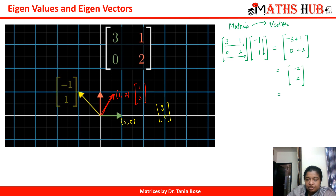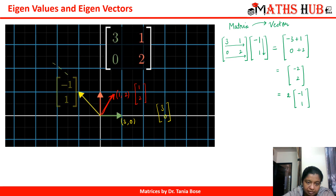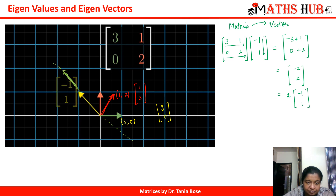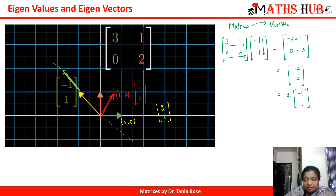Can we see any relationship with the vector we multiplied? You can see that [−2, 2] is exactly 2 times the vector [−1, 1]. That means if we extend the vector [−1, 1] in both directions, what is happening is that this vector is getting stretched by 2 units — the vector is becoming double. This is the first case: we multiplied the matrix with [−1, 1] and the resultant vector is 2 times the original vector.